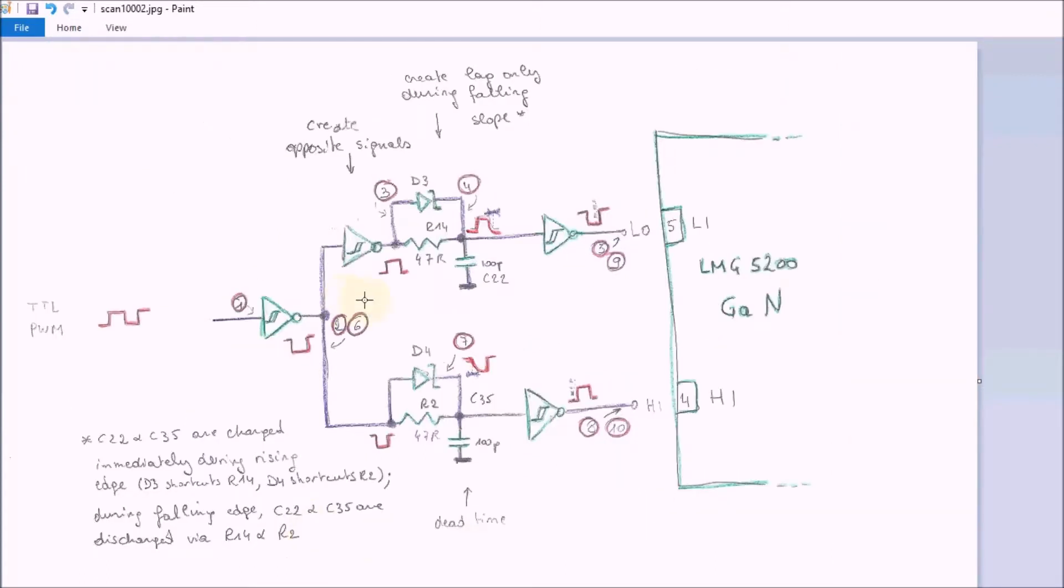You can find that back on the schematic here. The purpose is to build two different signals from a single PWM signal. So we give a PWM signal on the input and we want to have a signal where the rising edges are slightly delayed.